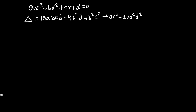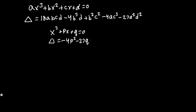This is the discriminant for the general cubic polynomial. For a depressed cubic, x³ + bx + q = 0, the discriminant is much nicer: Δ = -4p³ - 27q².